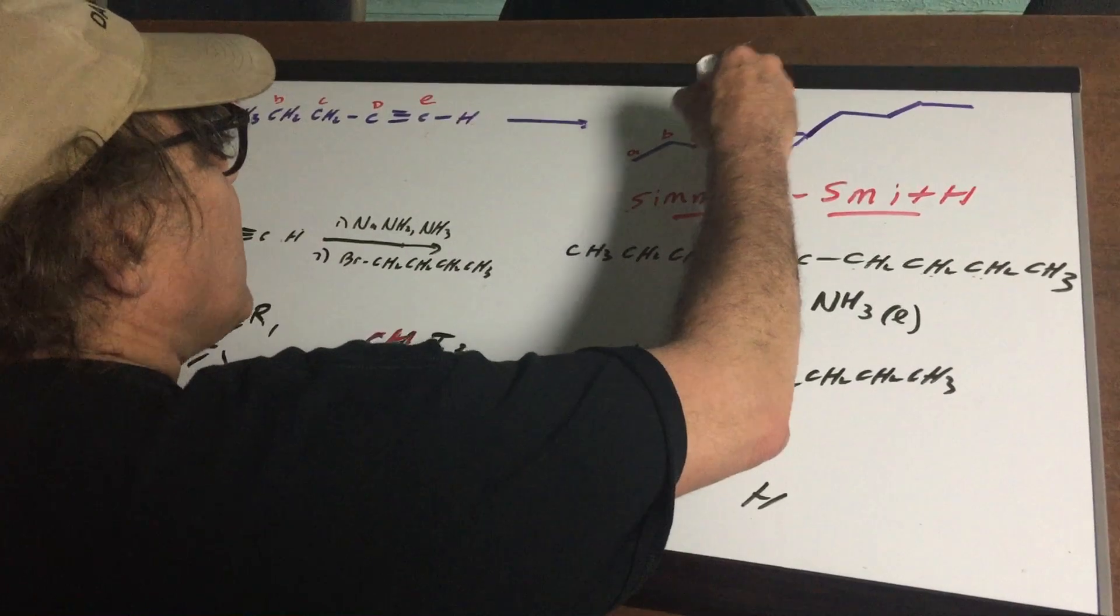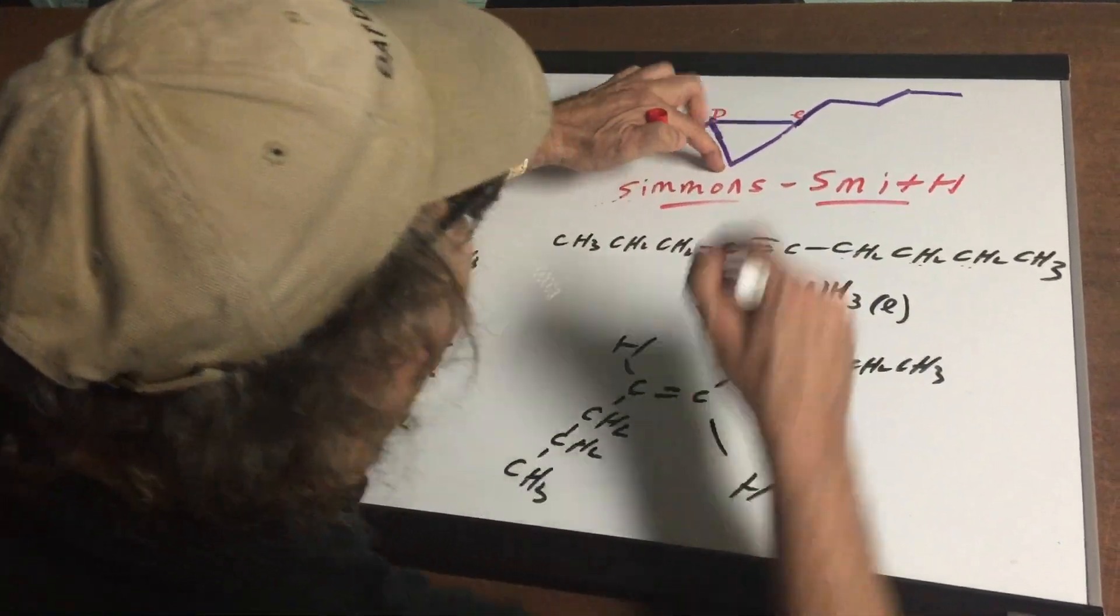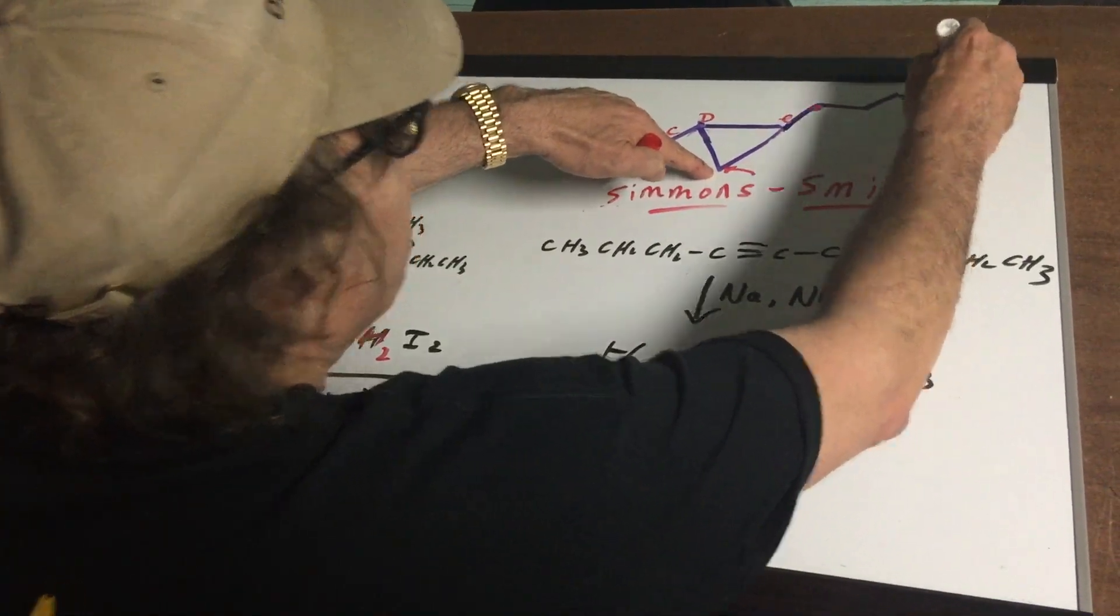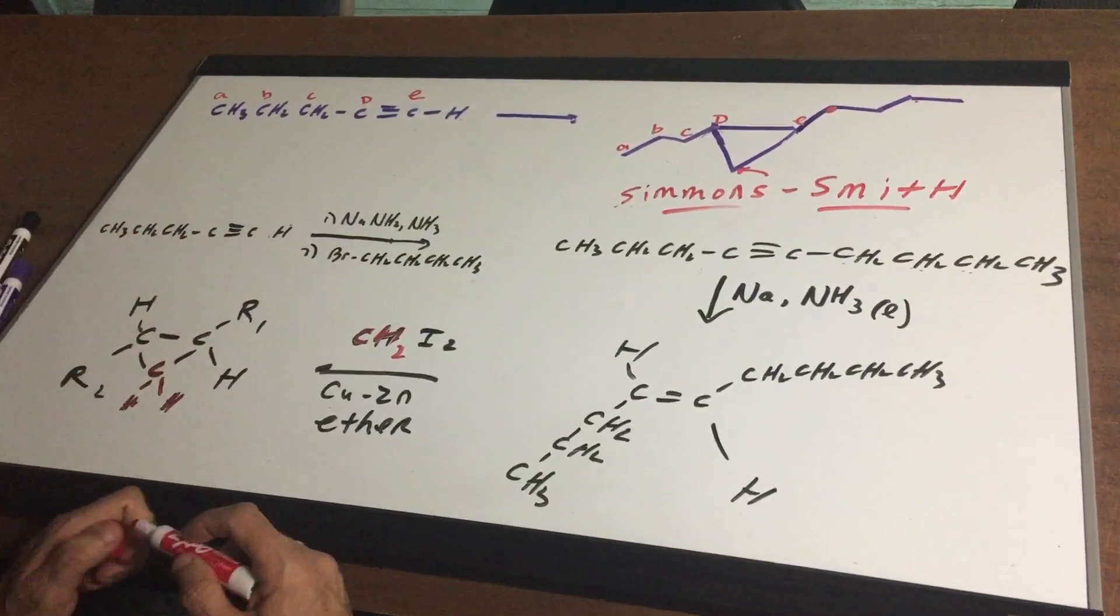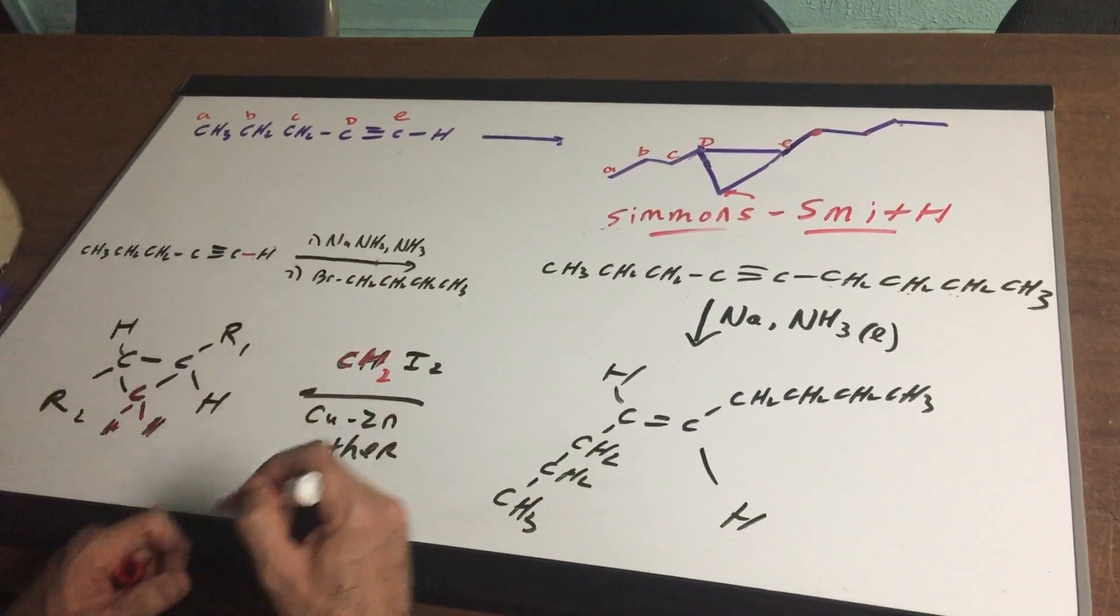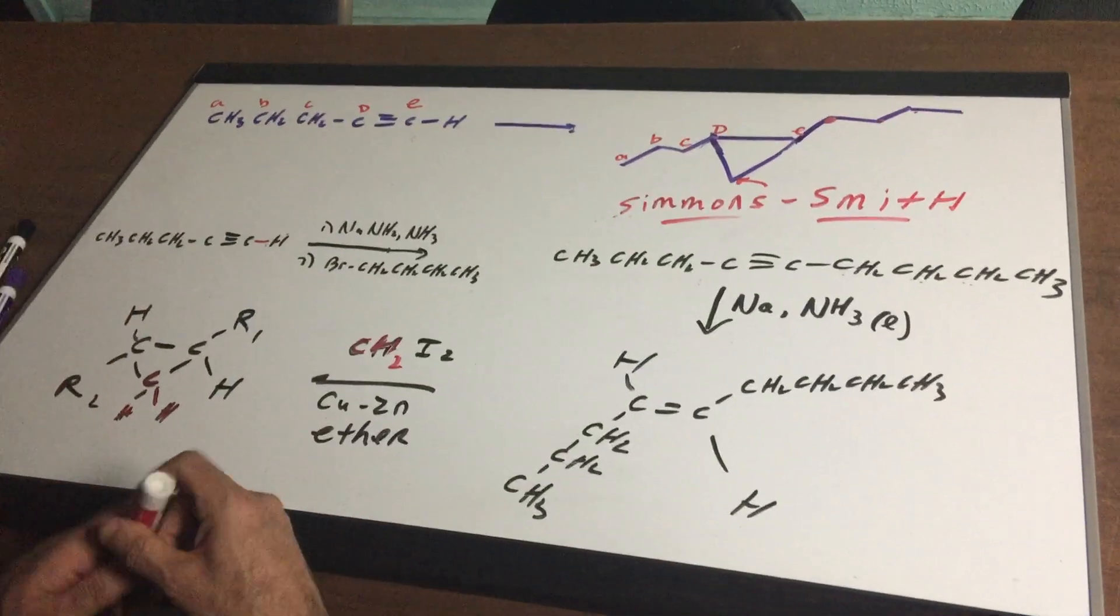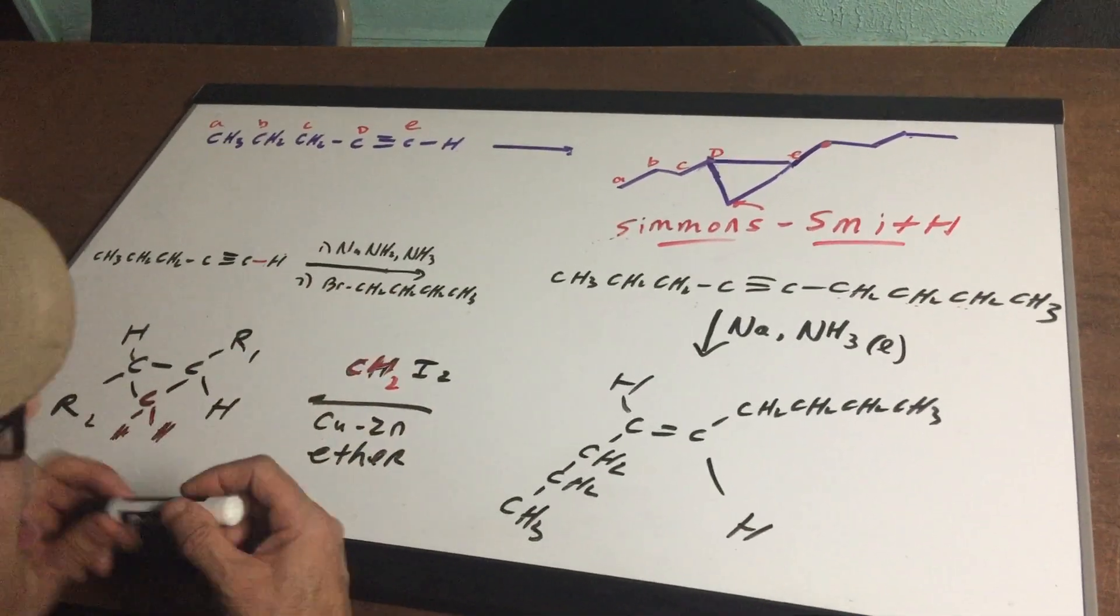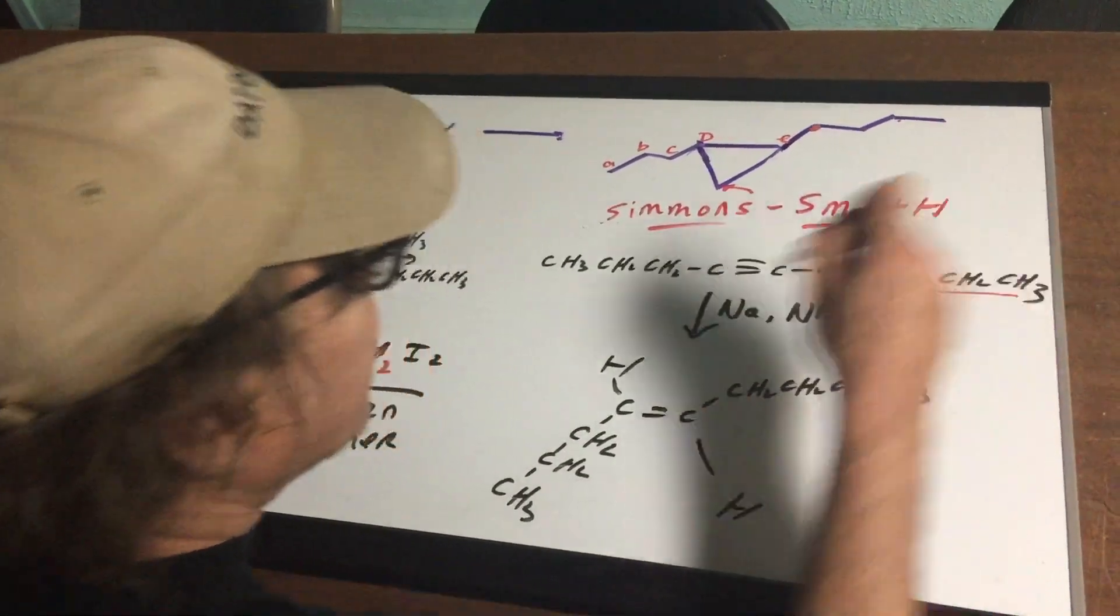So if this is my A, B, C, D, E, not counting this carbon which will come from the Simmons-Smith I need to add on four carbons. So what I'm gonna do here is I'm gonna take my one pentine and I'm gonna remove this H with NaNH2 and ammonia and I'm gonna add on my four carbon fragment and I'm gonna use a four carbon alkyl halide and that will allow me to build on the needed four carbons.